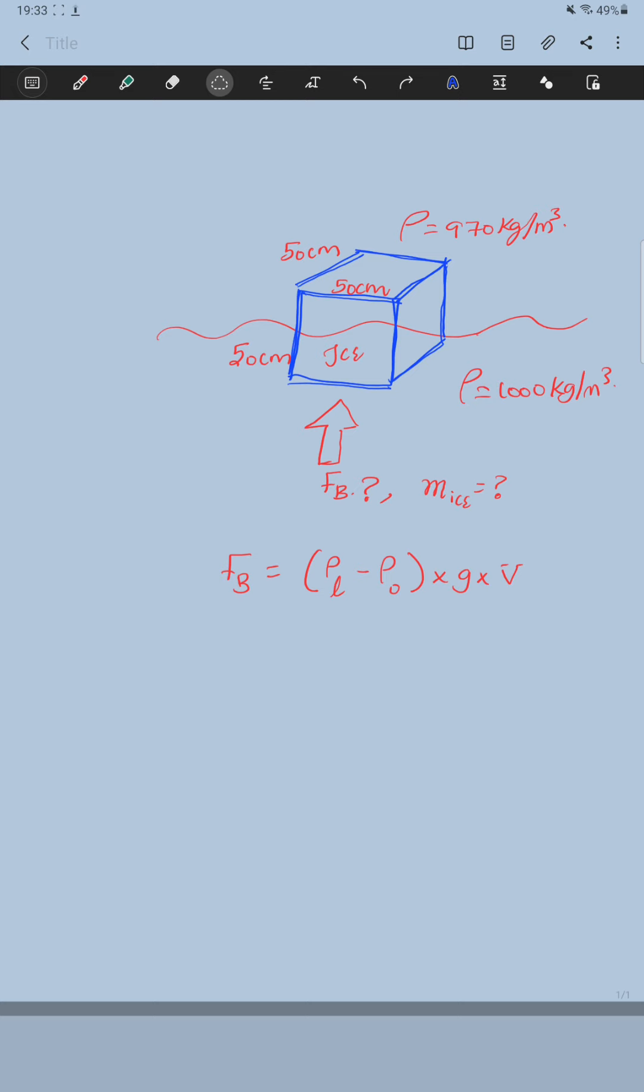We know from the formula buoyancy force FB equals the density of liquid - in this case the density of liquid is water so it is 1000 kilograms per meter cubed - minus the density of the object. The density of object here is ice, 970, times gravity times the volume - volume of what? Volume of the ice.